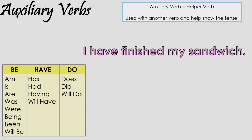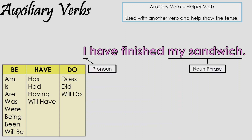Take the sentence: 'I have finished my sandwich.' We can pick out the nouns easy enough, then we find the verb, and then we see that the auxiliary verb is left.